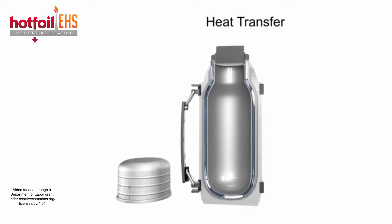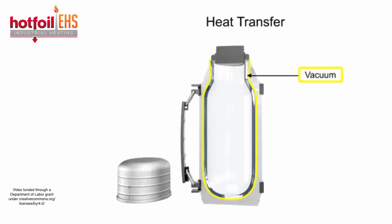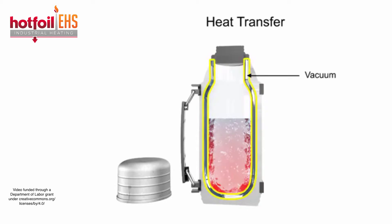In between the silvered glass walls of a thermos lies a vacuum. In the case of a hot liquid, heat transfer by convection through the vacuum is greatly restricted due to the absence of air molecules necessary to facilitate the transfer of heat. The lack of physical contact between the inside and outside walls of the thermos due to this airless space also greatly inhibits the movement of heat by conduction.